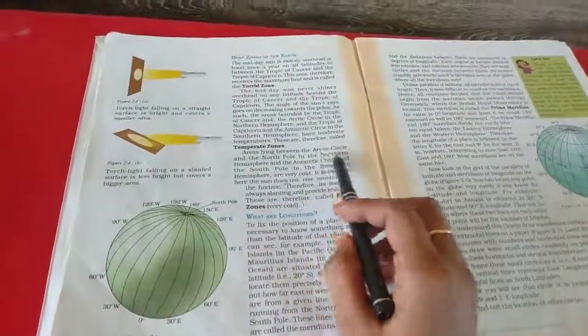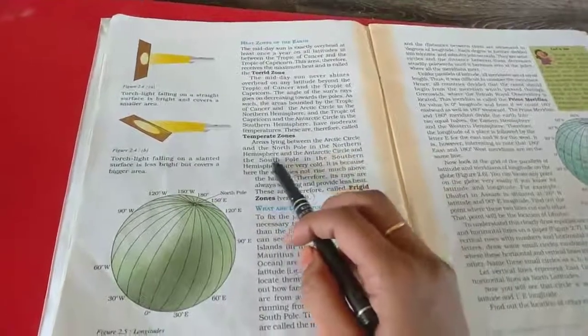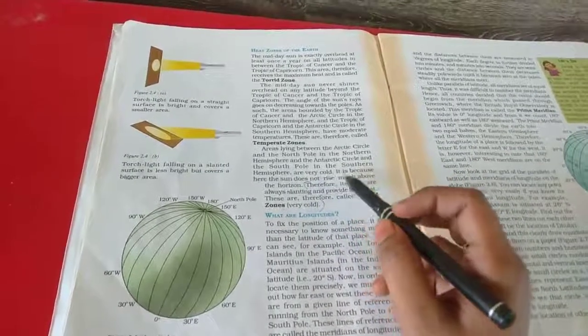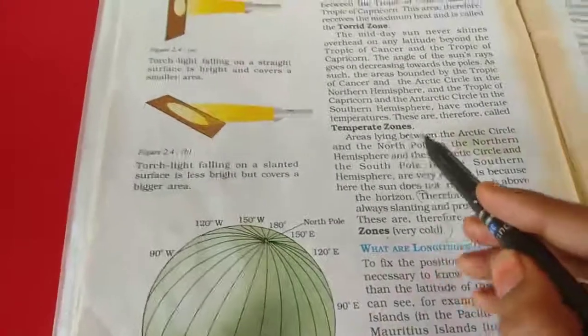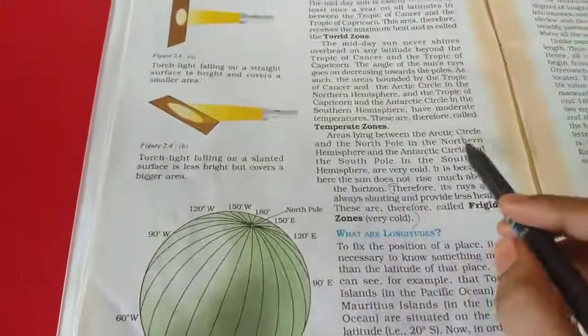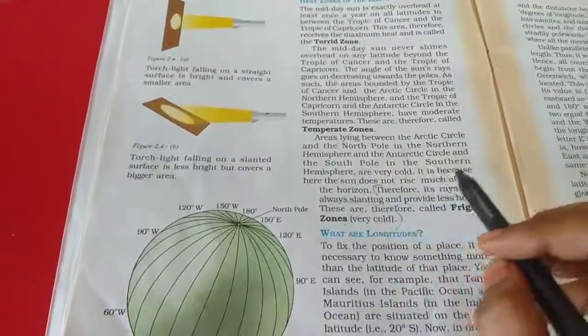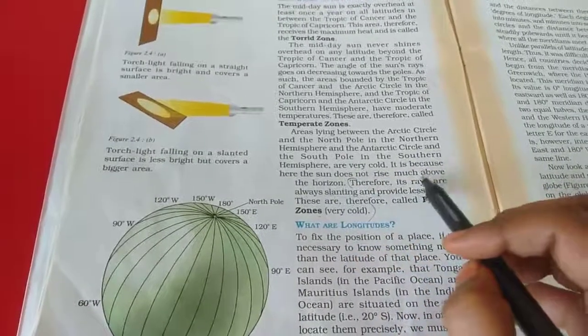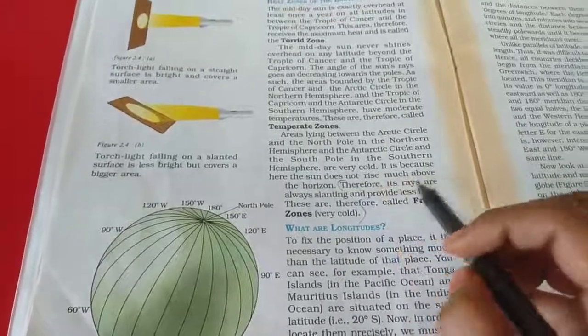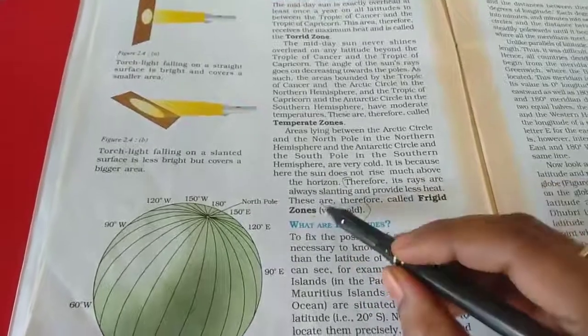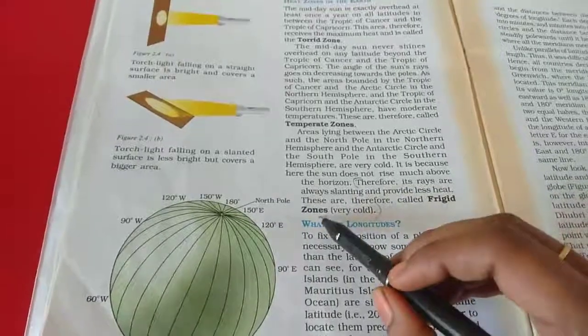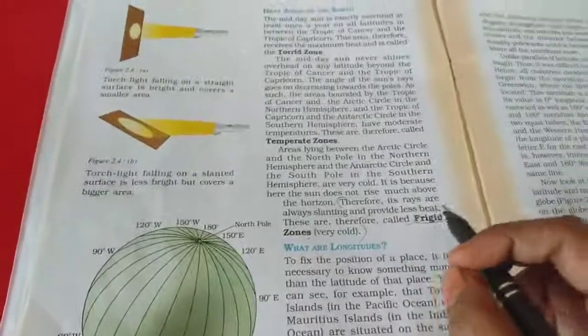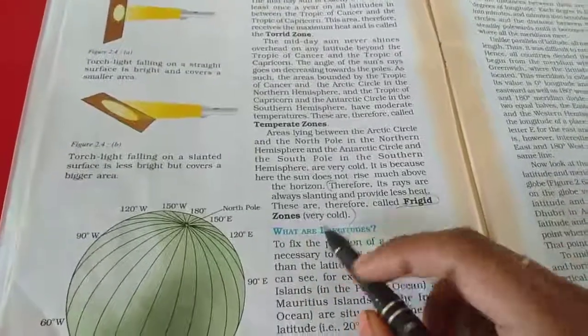Areas lying between the Arctic Circle and the North Pole in the northern hemisphere and the Antarctic Circle and the South Pole in the southern hemisphere are very cold. It is because here the sun does not rise much above the horizon. Therefore its rays always slant and they provide less heat. These are therefore called frigid zones. What are frigid? Fridge. Think about the fridge. This is called very cold. It means frigid zones.